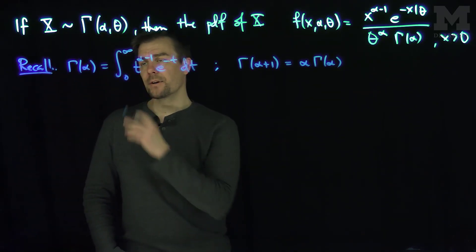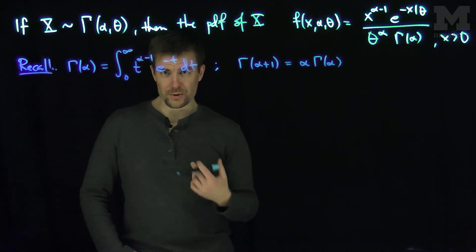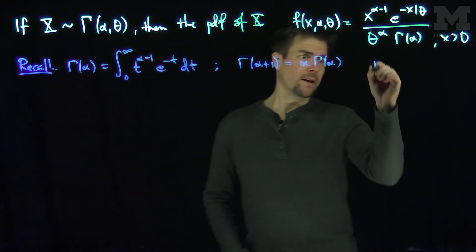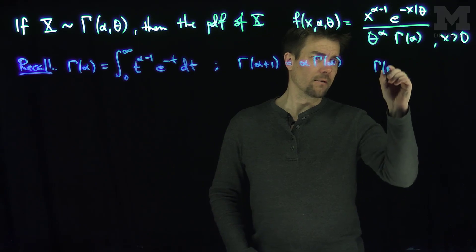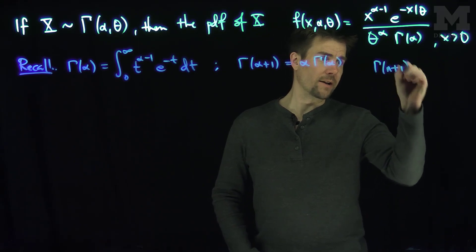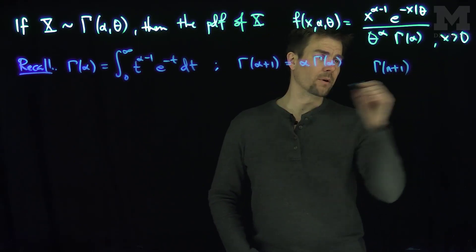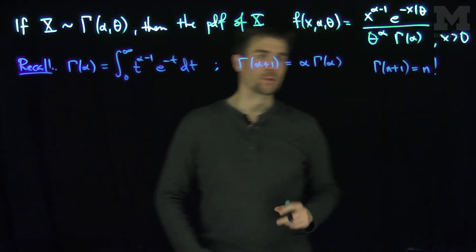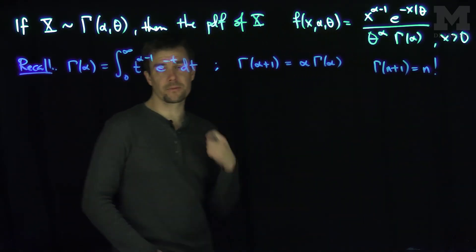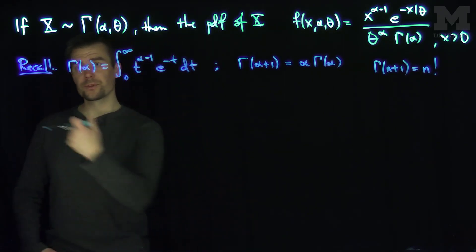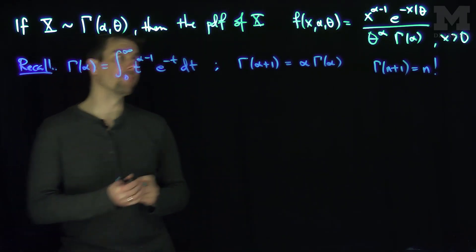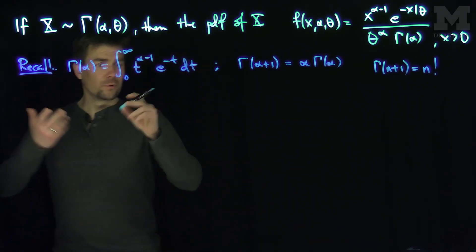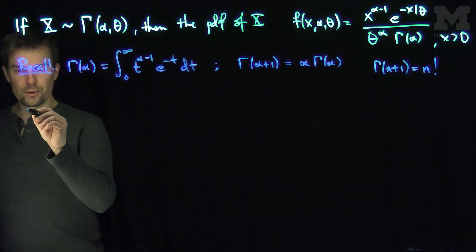When alpha is equal to n plus one, then gamma of n plus one, where n is a whole number, is going to be n factorial. So in some sense, this gamma function is a generalization of the factorial. Now, if I want to find the moment-generating function, let's go about it.